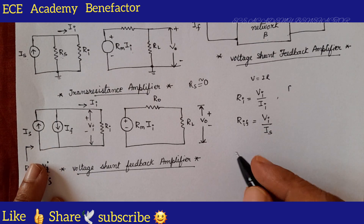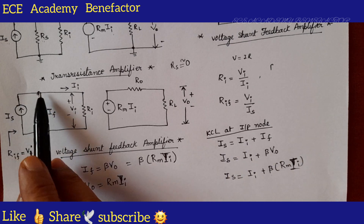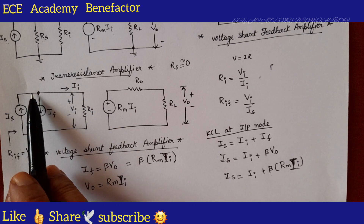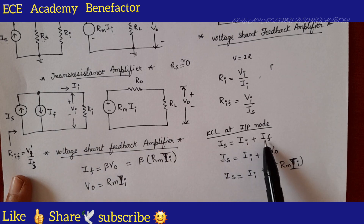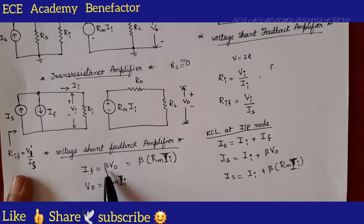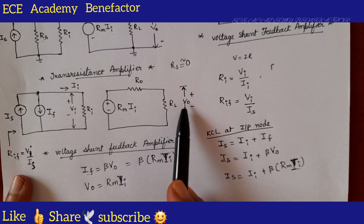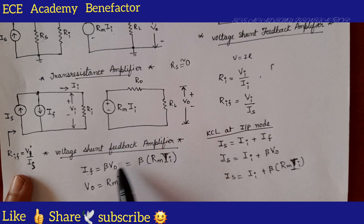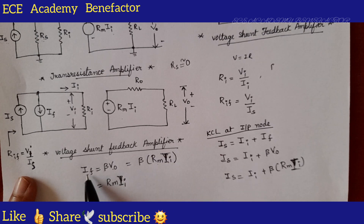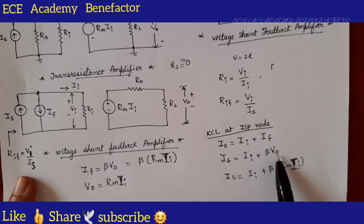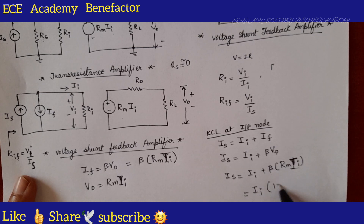Let us write KCL at the input node. Current entering equals current leaving. There are three currents: I-s (entering), and I-i and I-f (leaving). So I-s equals I-i plus I-f. The feedback current I-f is beta times V-naught. And V-naught equals R-m times I-i. Substituting I-f in the equation: I-s equals I-i plus beta times R-m times I-i, which gives I-s equals I-i times (1 plus beta R-m).